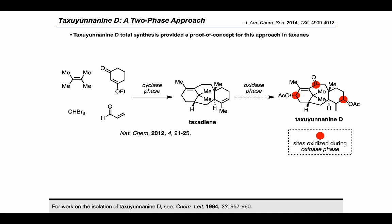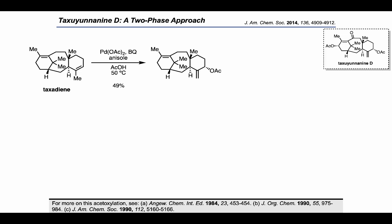As a first step towards accessing complex taxane targets, the Baran group started to look at ways to apply the intermediates from their 2012 Nature Chemistry cyclase phase sequence. For an initial target they selected taxaunanine D, which would require selective oxidations at three sites. Using taxadiene as a starting point, the authors started by installing the oxygen on the rightmost ring using palladium acetate and benzoquinone — an approach pioneered by Åkermark and Bäckvall. Inclusion of anisole resulted in improved yields, described as a serendipitous discovery initially from its use as an internal standard in an NMR study.